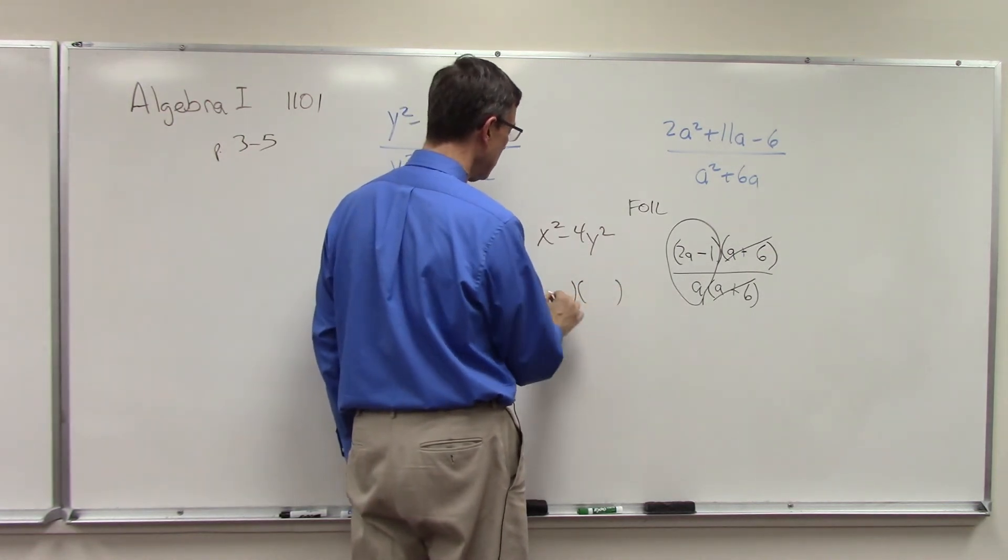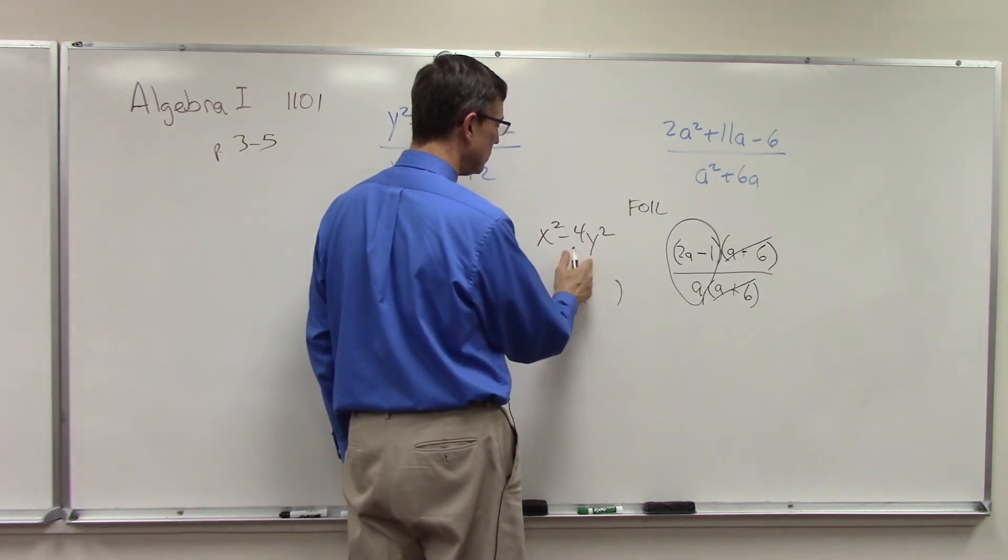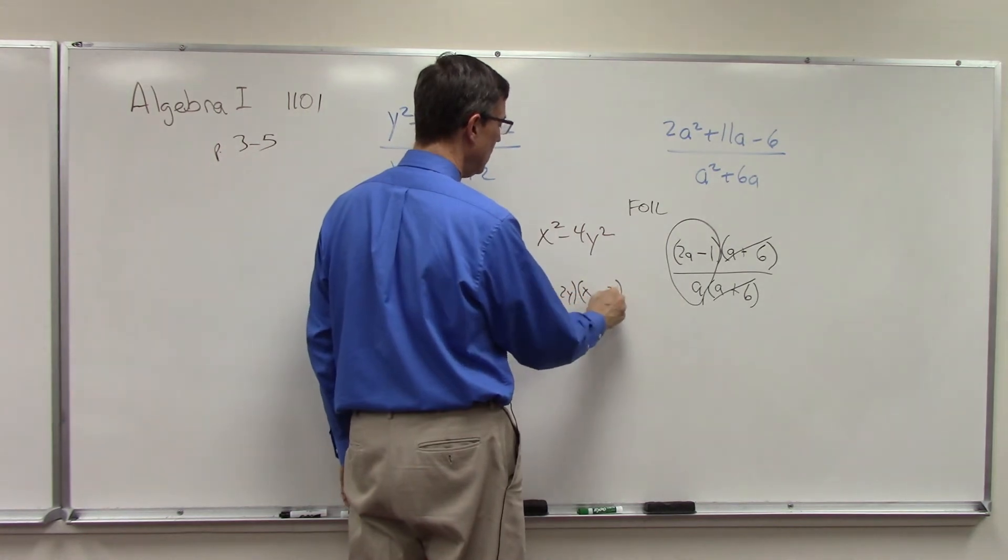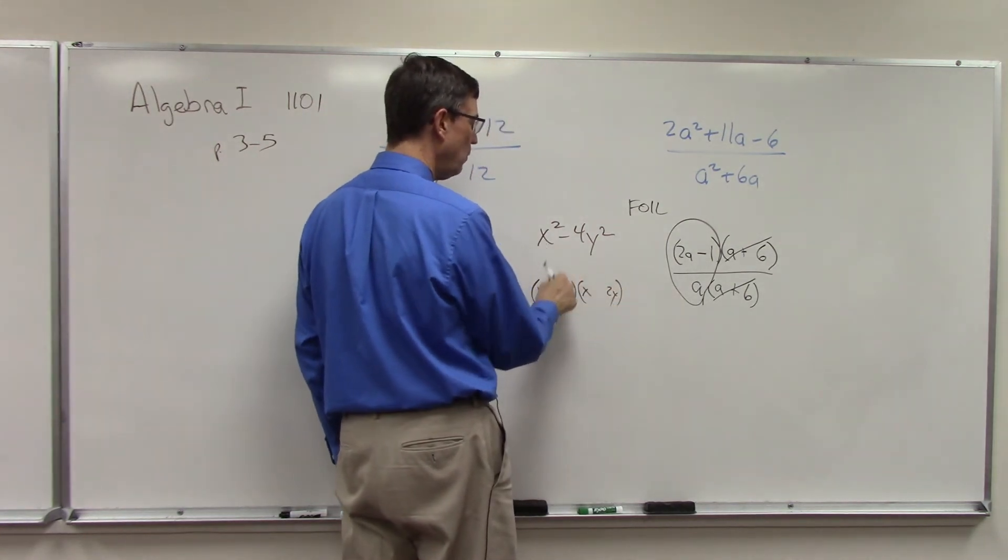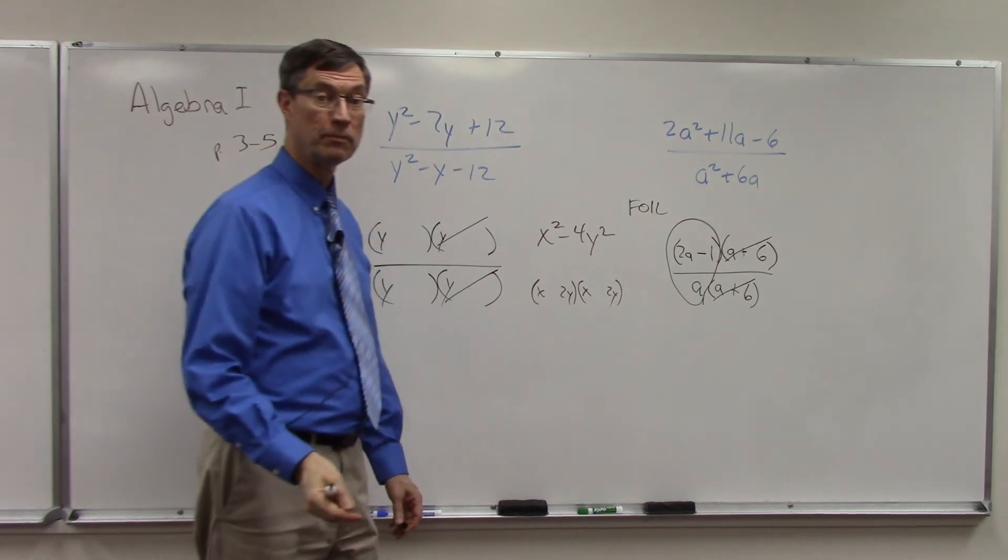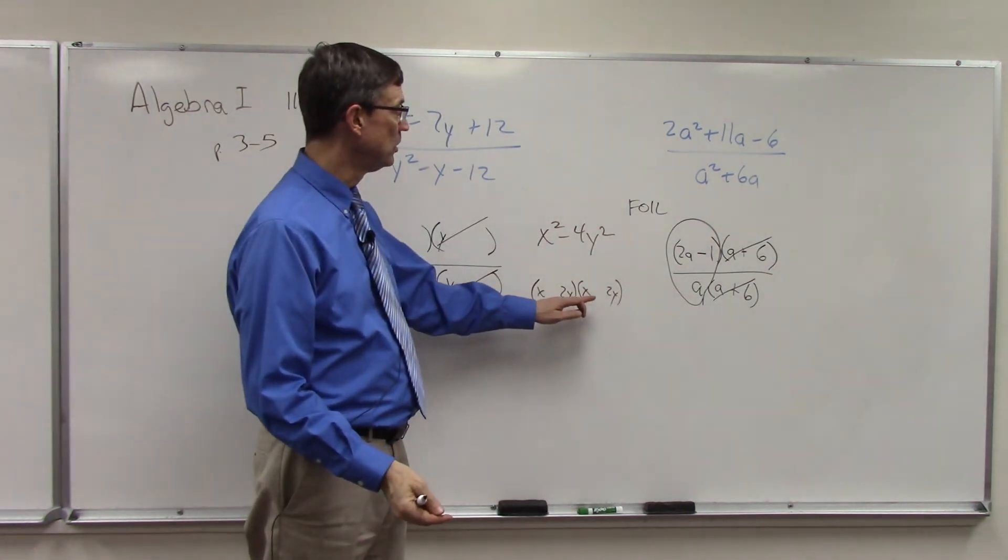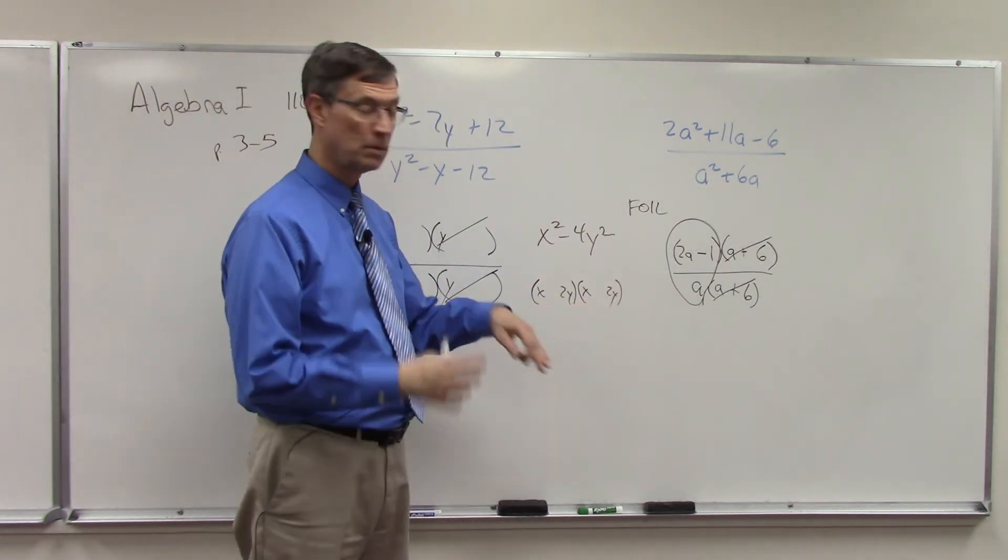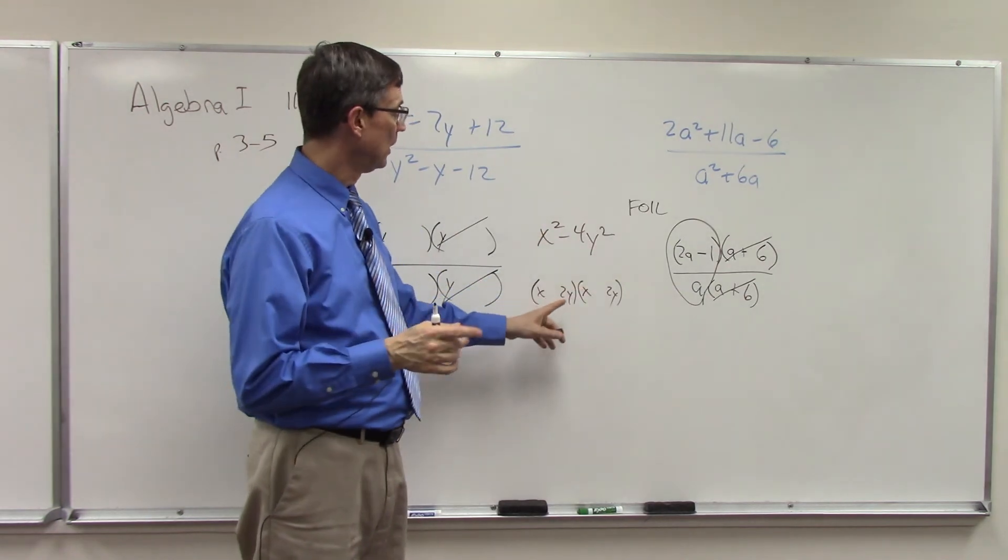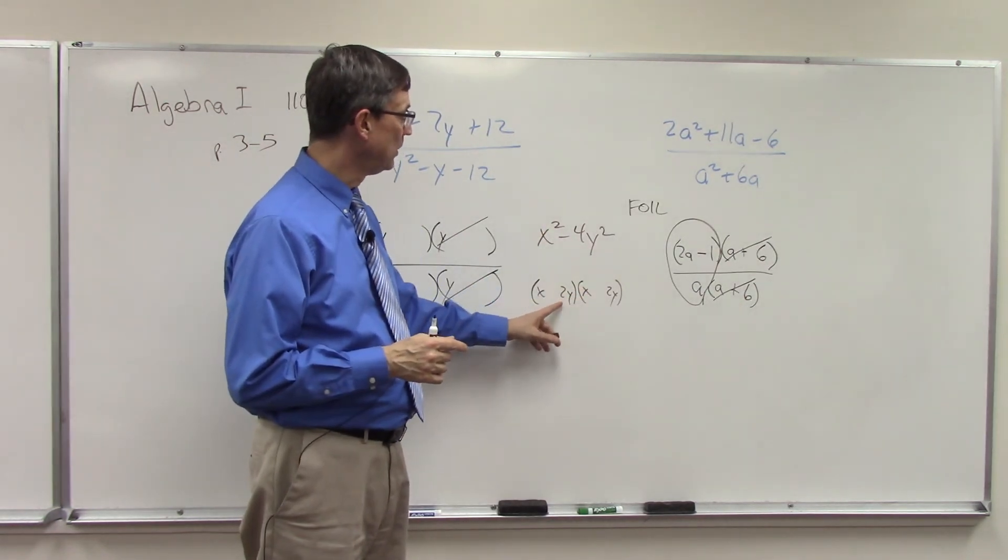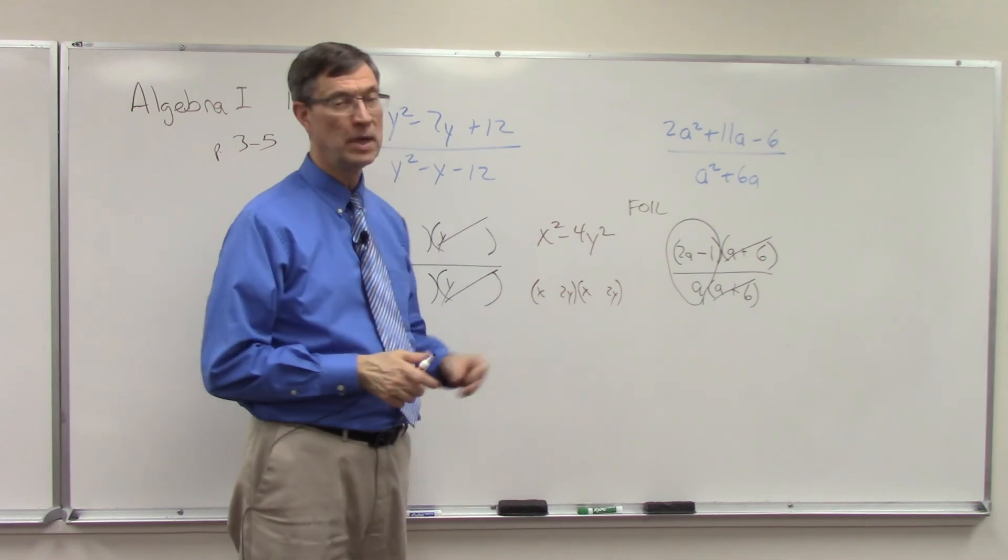We factor it by saying x, x to the square root of this, so 2y, 2y, and then one is positive, one is negative. And that way, the middle term, when you do the FOIL method, the middle term will completely cancel out. The last term will be negative and it'll be 4y squared.